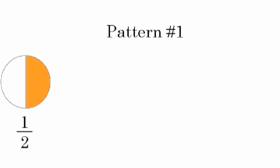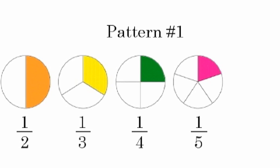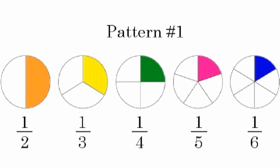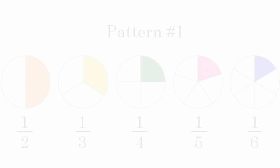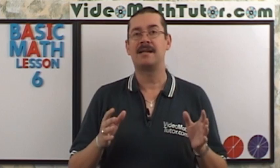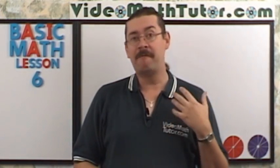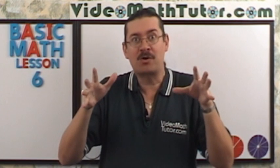Pattern number 1: Let's look at how the shaded regions change if we leave the numerators the same but increase the size of the denominators. For example, here's a half, then a third, a quarter, a fifth, and a sixth. So what's the pattern? If the numerator stays the same, as the denominator gets larger and larger, the actual value of the fraction gets smaller and smaller.